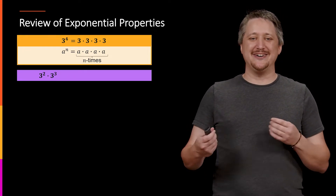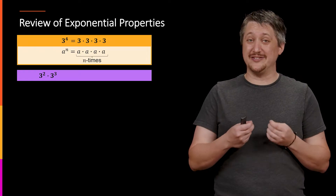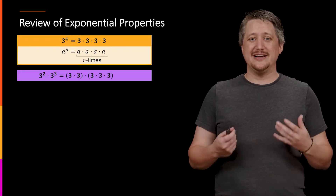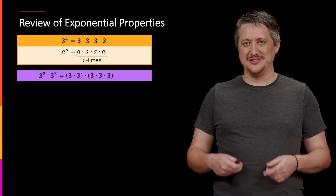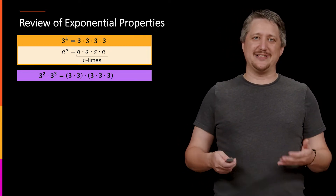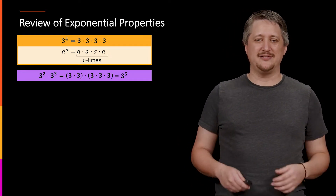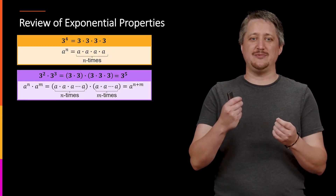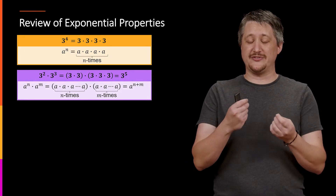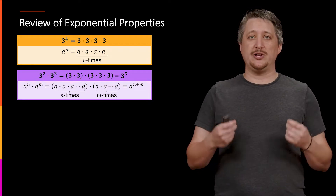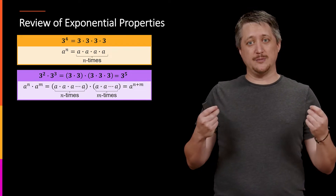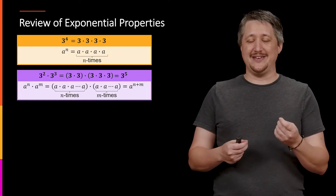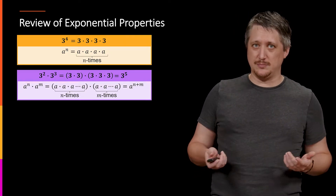So if we have the product of two things, and importantly they're the same base — so three squared times three to the third — that's really three times three times three times three times three. We can write that as three to the fifth. So in general, if we have a to the n times a to the m, we can combine them by adding the powers together: a to the n times a to the m equals a to the n plus m.